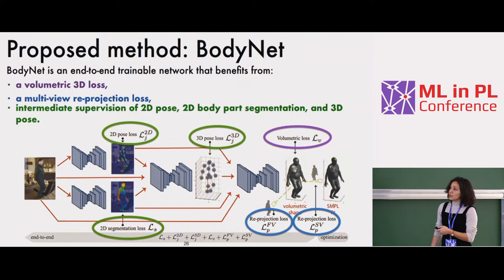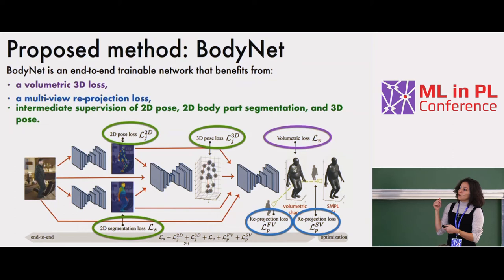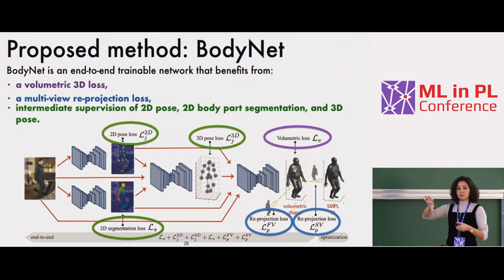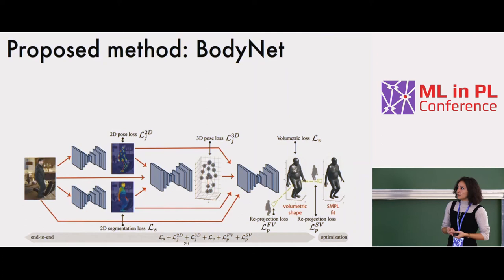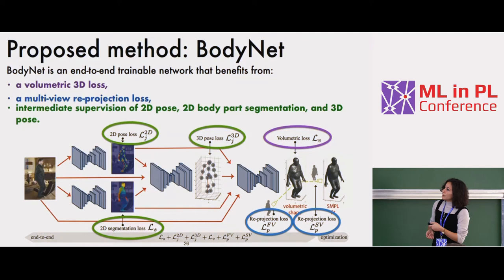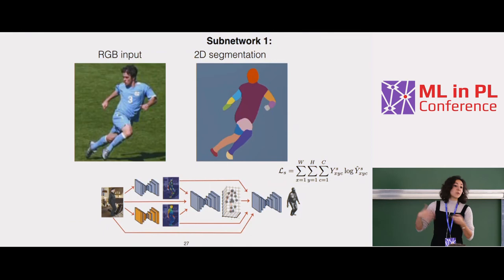We also added 3D pose estimation: localizing joints on a quantized 3D grid, shown as Gaussians. Instead of classifying each voxel to an X, Y, Z coordinate, we regress to a Gaussian around the location, giving some uncertainty that also helps prediction. Combined experimentally, we show better performance with all these components.